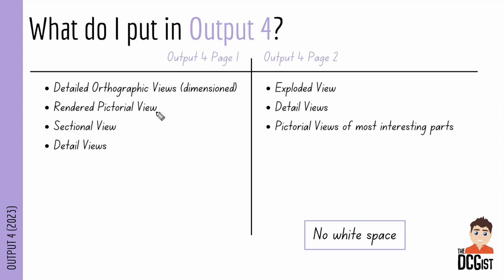Practically speaking, you're going to have two pages — Output 4 Page 1 and Output 4 Page 2. On Page 1, I recommend having your orthographic views with dimensions, your rendered pictorial view, a sectional view, and detail views. The reason to put the sectional view on the first page is that you need orthographic views to take a sectional view, so it just makes sense to have them on the same page. On Page 2, put the exploded view. The reason to keep orthographic and exploded views on different pages is simply that they're the biggest views and take up the most space.